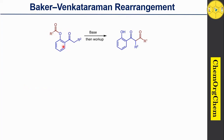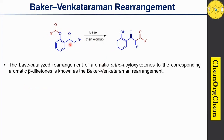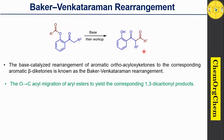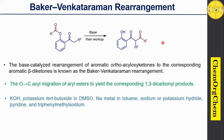The Baker-Venkataraman rearrangement is a base-catalyzed rearrangement of aromatic ortho-acyloxy ketones into the corresponding aromatic β-diketones. We can simply say that this acyloxy group — attached with oxygen — is migrated to this particular carbon, which results in the corresponding 1,3-tricarbonyl compounds. This class of reaction is called the Baker-Venkataraman rearrangement.